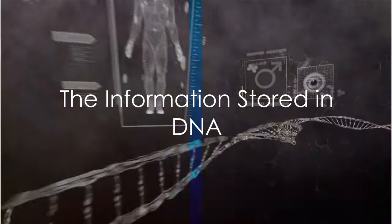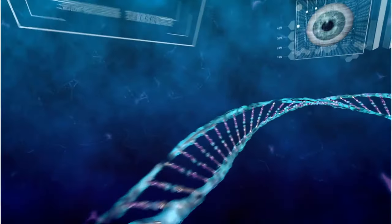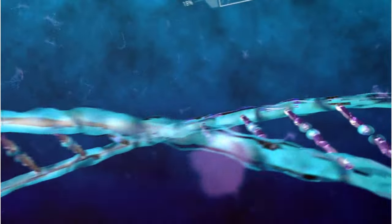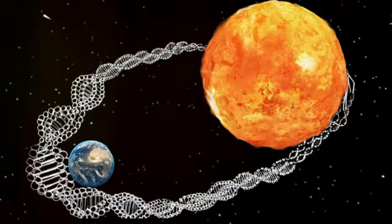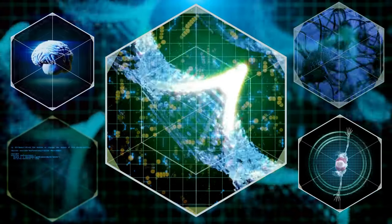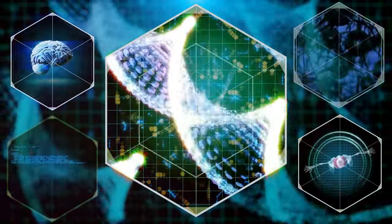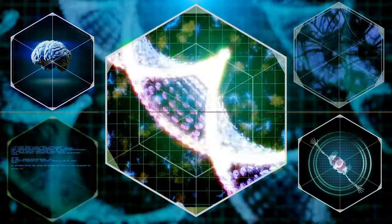Speaking of complexity, did you know that if you unraveled all the DNA in your body, it would stretch from here to the sun and back over 60 times? That's a lot of information stored in a tiny space. It's like nature's version of a hard drive, storing all the instructions needed to make you.